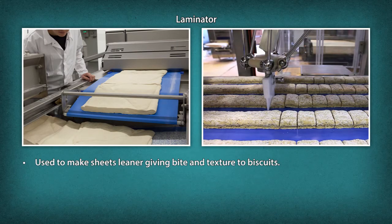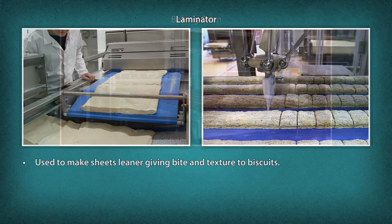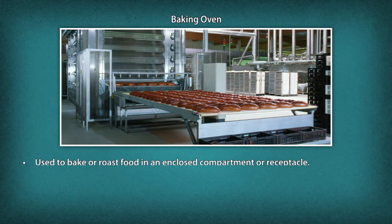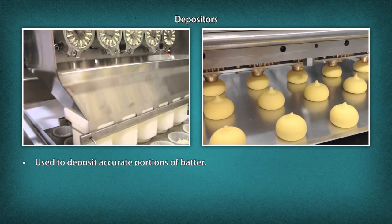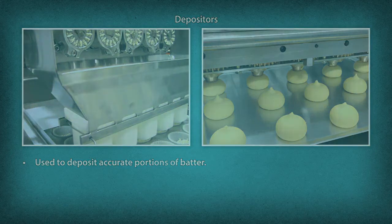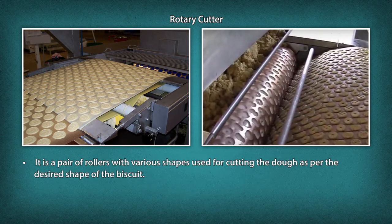Laminator: used to make sheets leaner, giving bite and texture to biscuits. Depending on the orientation, laminators are classified as vertical and horizontal. Baking Oven: used to bake or roast food in an enclosed compartment or receptacle. Depositors: used to deposit accurate portions of batter. Rotary Cutter: a pair of rollers with various shapes used for cutting the dough as per the desired shape of the biscuit.